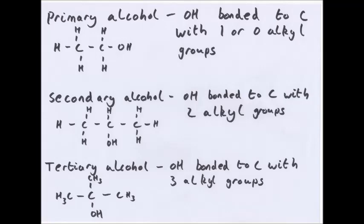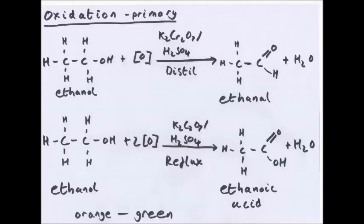Oxidation. Oxidation occurs using either sulfuric acid or potassium dichromate as a catalyst for all oxidation. And to show oxidation, we use an O inside square brackets.